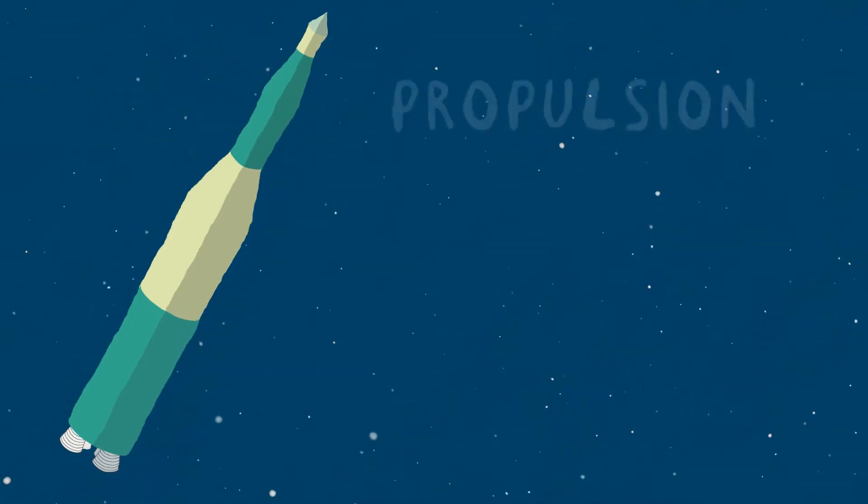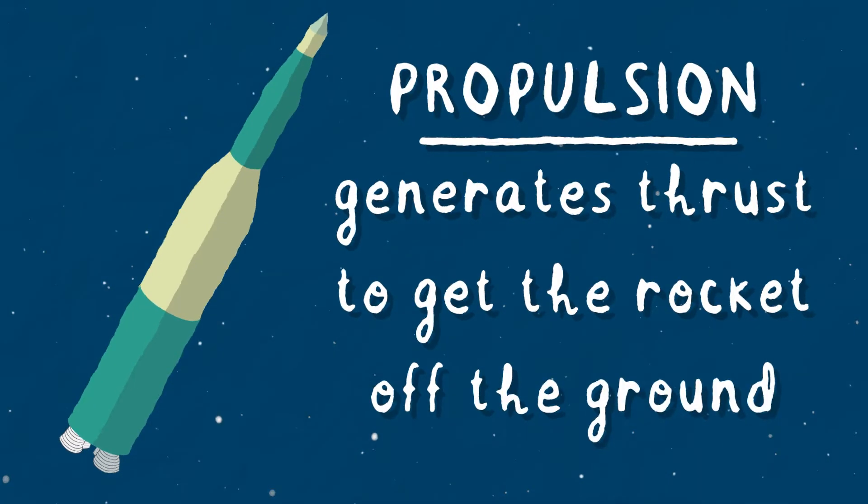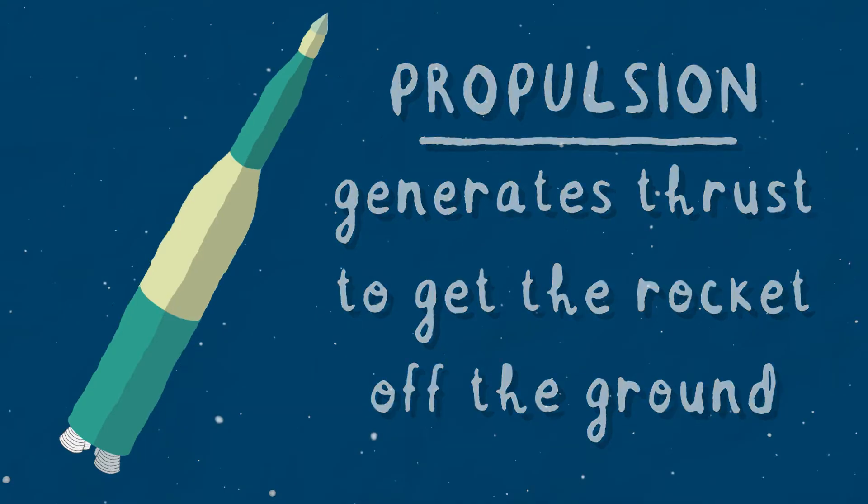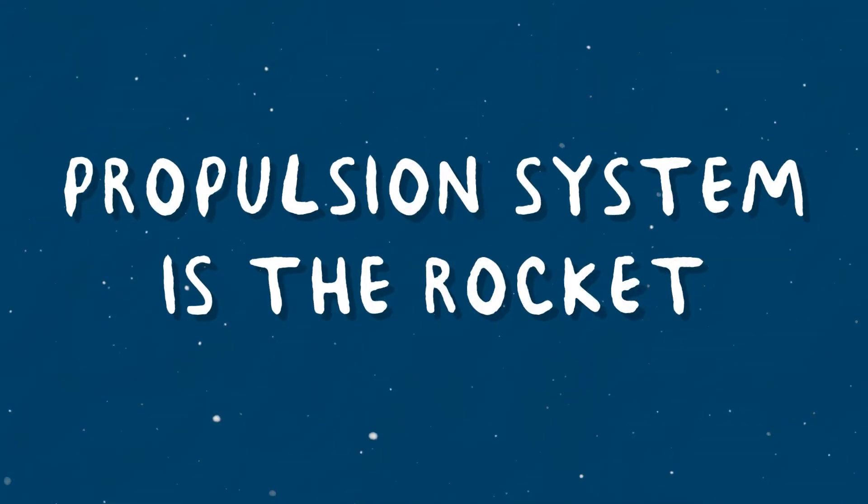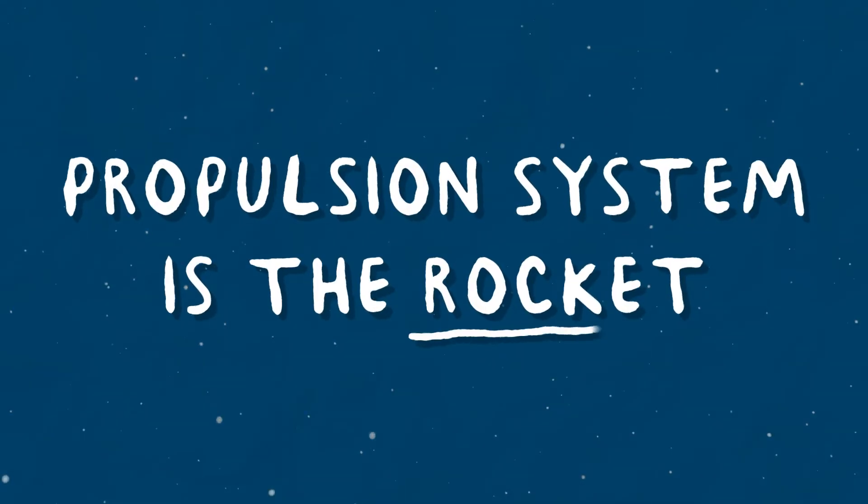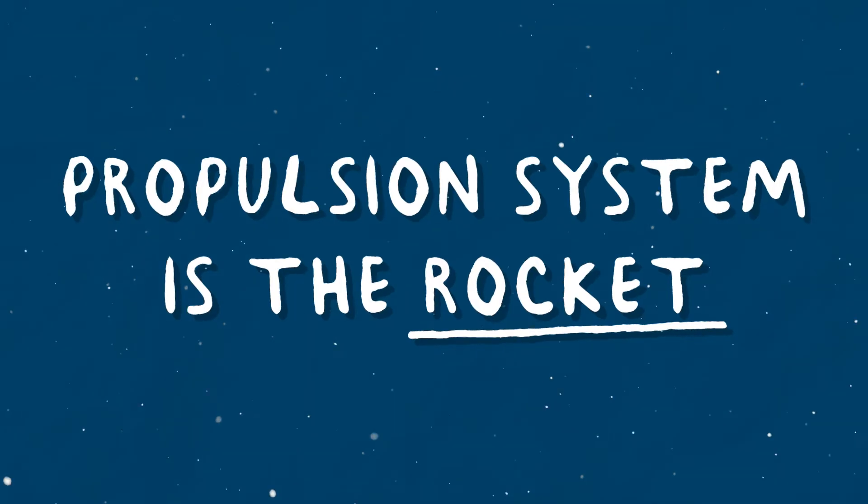The propulsion system generates thrust to get the rocket into space. Technically, the propulsion system is what we would call the rocket, but we tend to use the word rocket colloquially to refer to the whole spacecraft.